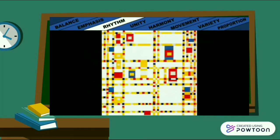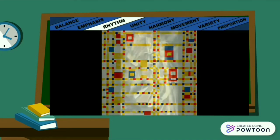In Broadway Boogie Woogie by Piet Mondrian, the artist achieved rhythm through repeated shapes, lines, and colors, suggesting the rhythm and movement of a busy city street. In Nude Descending a Staircase by Marcel Duchamp, the artist uses the principle of rhythm to create a feeling of movement.